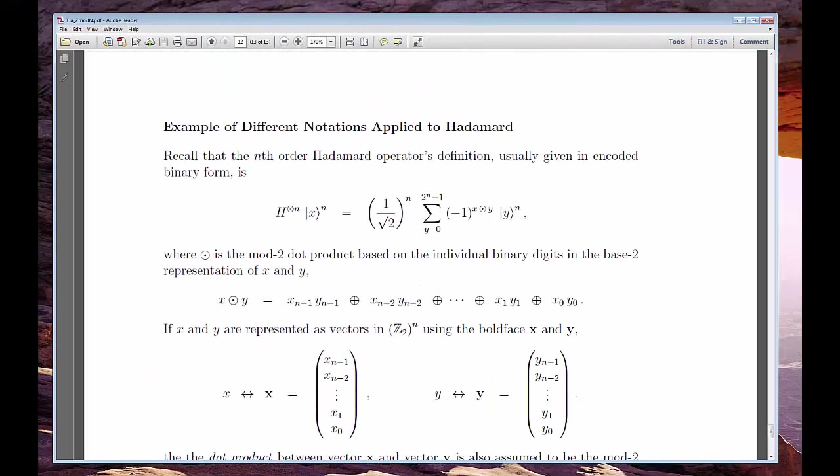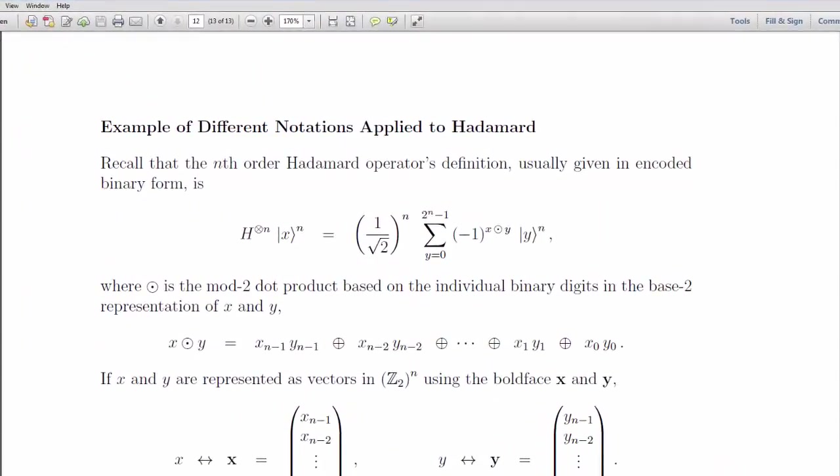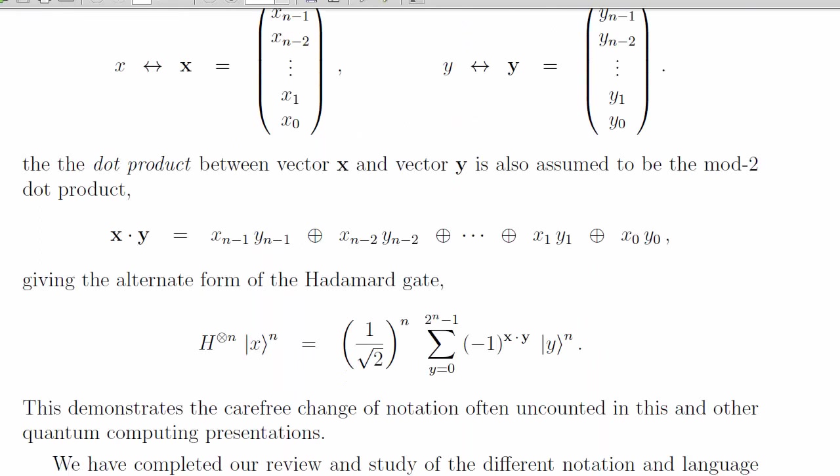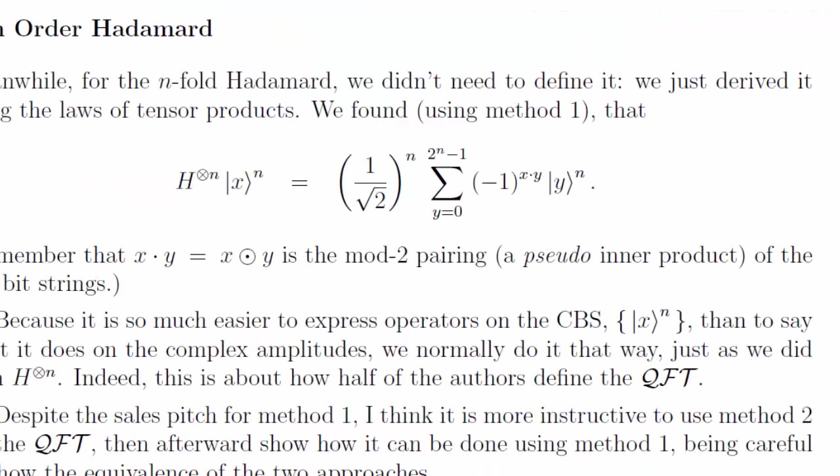A consequence of these different notational systems is that the nth order Hadamard operator can look like this on one day, and like this on another, and like this on a third.